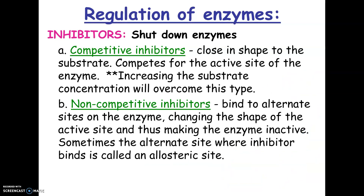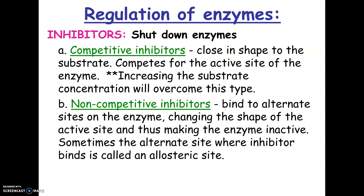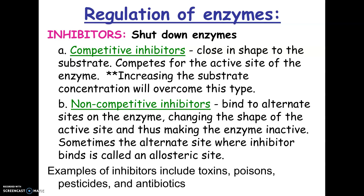Non-competitive inhibitors change the shape of the active site and shut those enzymes down. Some things that are dangerous to us — like toxins and poisons — are inhibitors, and that's actually how they damage the body. For example, cyanide is an inhibitor of one of the important enzymes in the electron transport chain of cell respiration, so cells can't make ATP and they die. This is also one of the ways antibiotics kill bacteria — they inhibit particular enzymes that might be necessary to build the cell wall, for example.